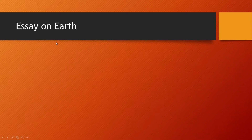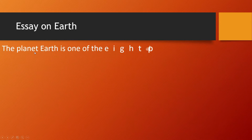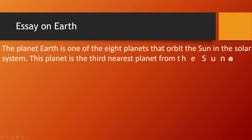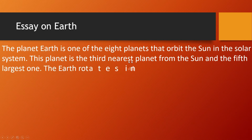Essay on Earth. The planet Earth is one of the eight planets that orbit the sun in the solar system. This planet is the third nearest planet from the sun and the fifth largest one. The Earth rotates on its axis.